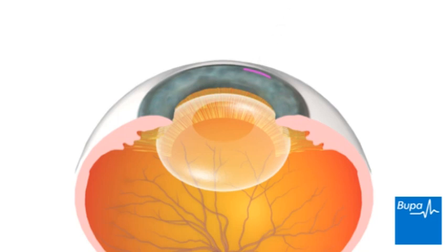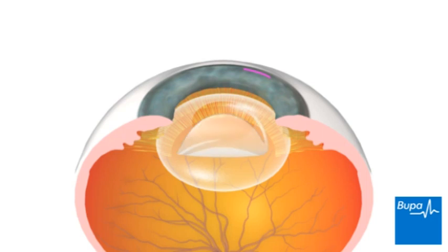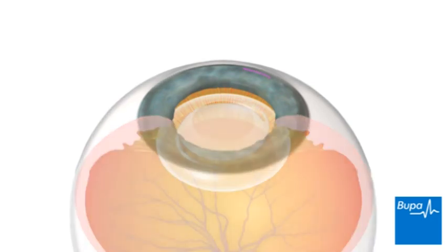An artificial lens, or intraocular lens, is inserted through the cut into the lens capsule. The lens is folded so that it can pass easily through the tiny opening. Once inserted, the artificial lens unfolds itself and replaces the old lens.